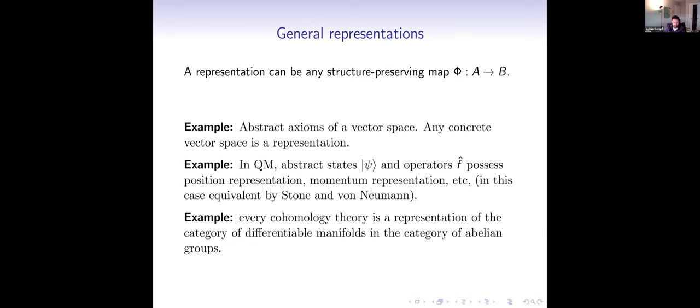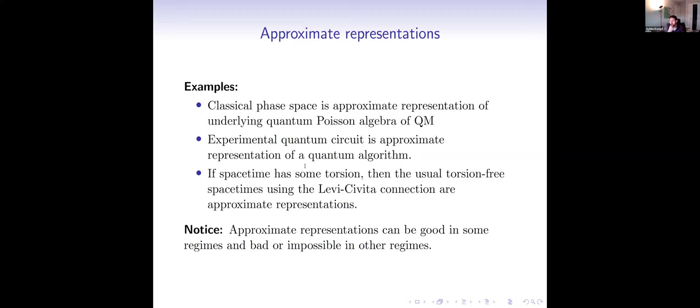I also need the notion of an approximate representation — simply trying to get a representation but it doesn't quite work. For example, classical phase space is used all over the place in engineering, but classical phase space is incorrect. Actual physics uses the quantum phase space, the canonical algebra of quantum mechanics. Nevertheless, we often get away with using classical phase space, but that's not a true representation of the algebra of positions and momenta in quantum mechanics — it's what might be called an approximate representation, good in a certain regime but failing when h-bar becomes significant.